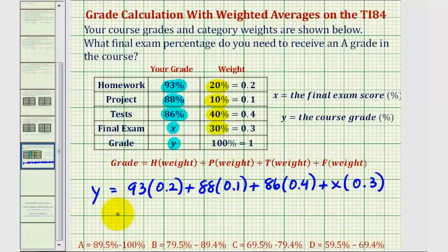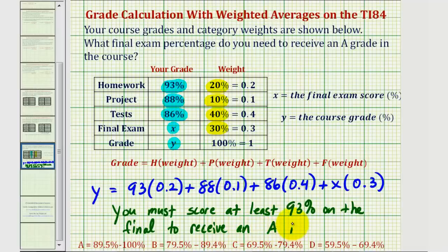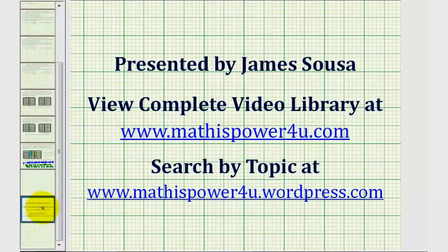So the conclusion is, you must score at least 93% on the final to receive an A in the course. Which I'm sure you will do. I hope you found this explanation helpful. Thank you.